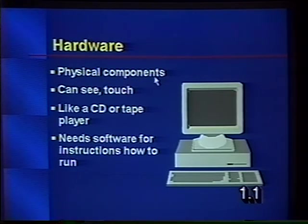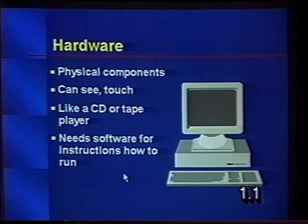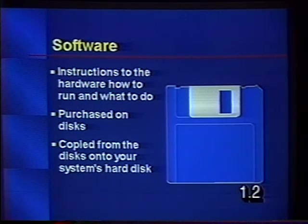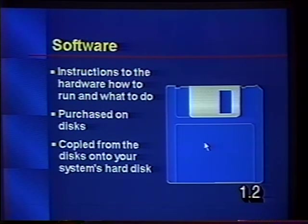The hardware consists of the physical components that you can see and touch. It acts like a CD player or a tape player — you can have one, but until you put a CD or tape in, it really doesn't do anything. It needs software for instructions on how to run. Software provides instructions to the hardware and is usually purchased on diskette or CD-ROM, then copied onto your system's hard disk.